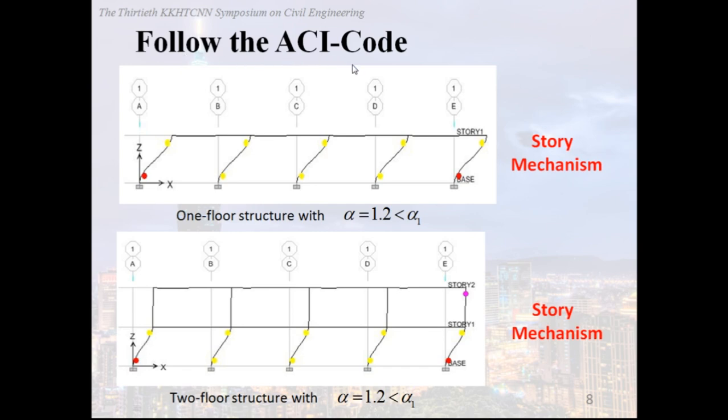Follow the ACI code. If we follow the ACI code to establish the ETABS model, we found that the results are all beam mechanism for one floor structure or two floor structure.